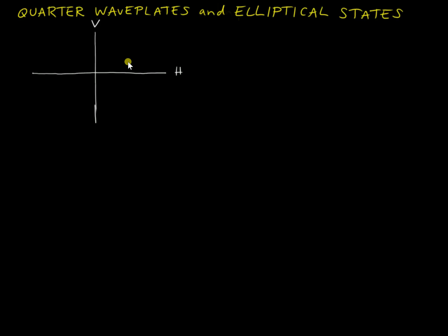Quarter waveplates, when they act upon linear states, in general generate an elliptical state, and it's important to understand how the elliptical state relates to the input.